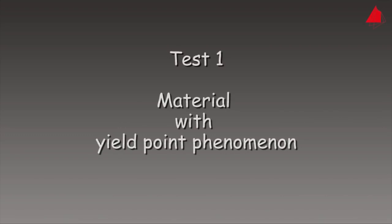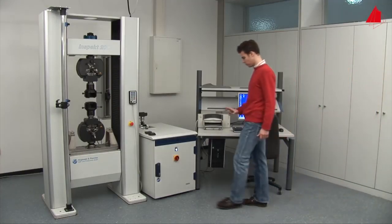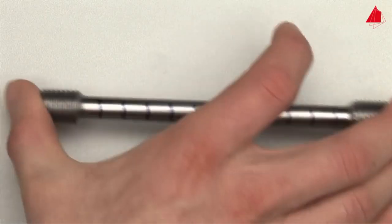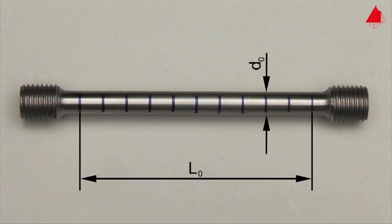The tensile test: first test material with yield point phenomenon. In the first tensile test, a plain carbon steel with yield point phenomenon is to be tested. This is the test piece. It has a cylindrical test region with an original diameter of 10 millimeters and an original gauge length of 100 millimeters. Within this test region, distance marks have been drawn at regular intervals. They help to visualize and measure the plastic behavior of the specimen.